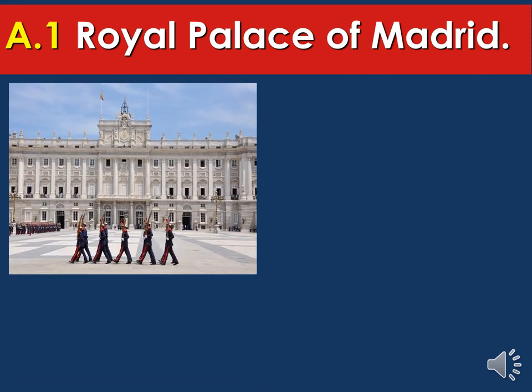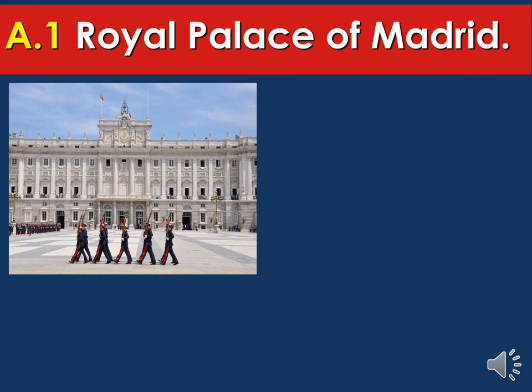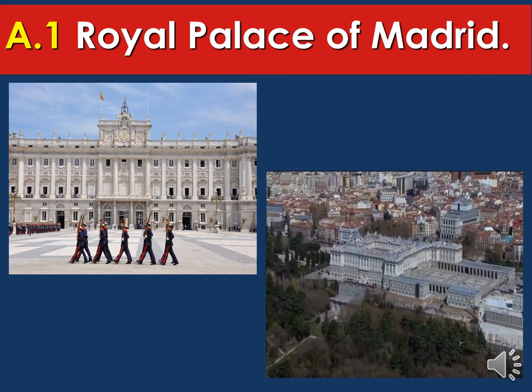Every Tuesday you can actually see the National Guard practicing in the center of the palace — people can watch, take pictures, and see how they practice. This is what it looks like from the back — on the back are woods, and on the front they are facing the city.